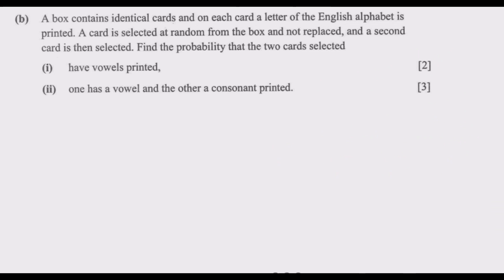Let us look at question 4b. A box contains identical cards, and on each card a letter of the English alphabet is printed. A card is selected at random from the box and not replaced, and a second card is then selected. Find the probability that the two cards selected are: (i) both vowels, and (ii) one a vowel and the other a consonant.